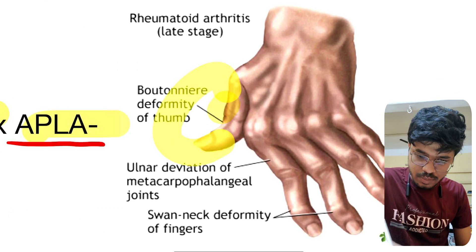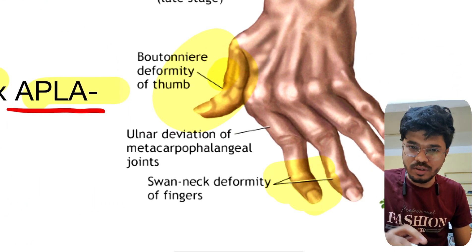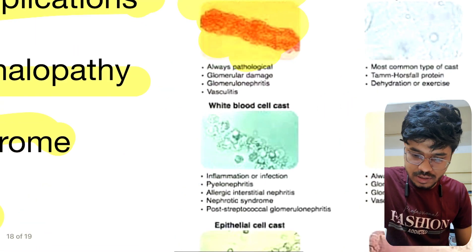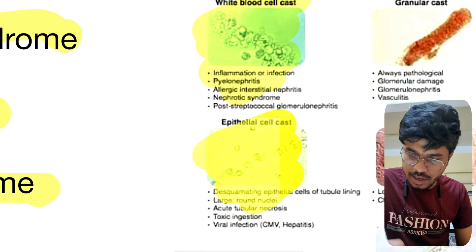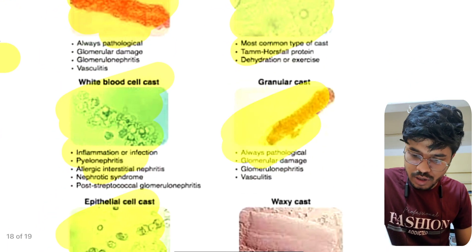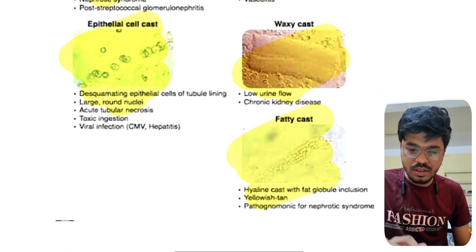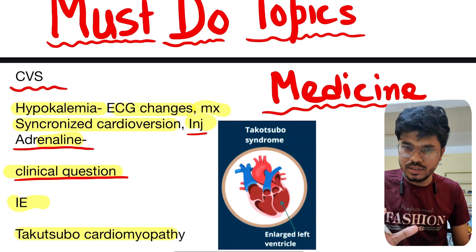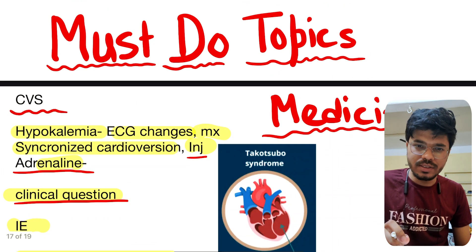This is a picture of Gottron's papules seen in dermatomyositis. Heliotrope rash is another important sign seen in dermatomyositis. This is boutonniere deformity and this is swan neck deformity — seen in rheumatoid arthritis. These are red blood cell casts, white blood cell casts, epithelial casts, hyaline casts, granular casts, waxy casts, and fatty casts. So these are the important must-do topics in CVS, rheumat, and nephro — please revise these topics carefully.